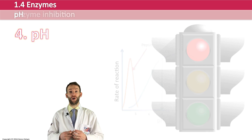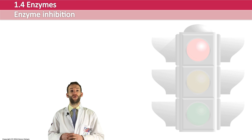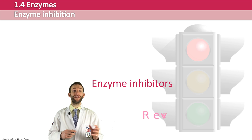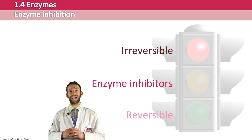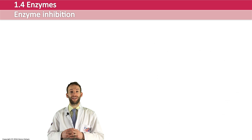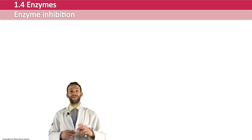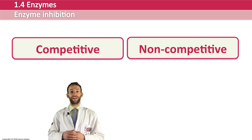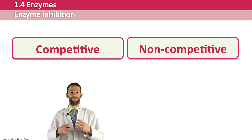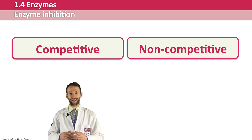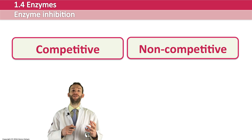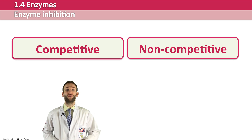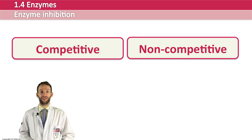Some substances actually stop enzymes from working altogether — these are called enzyme inhibitors. They can be reversible or irreversible. The two we're going to look at are types of reversible inhibition. These are really useful in metabolic reactions because it means you can control the reaction, and when you remove them the reaction will start up again. This is a way that reactions can be limited and controlled in the body, which is a really important thing to be able to do.